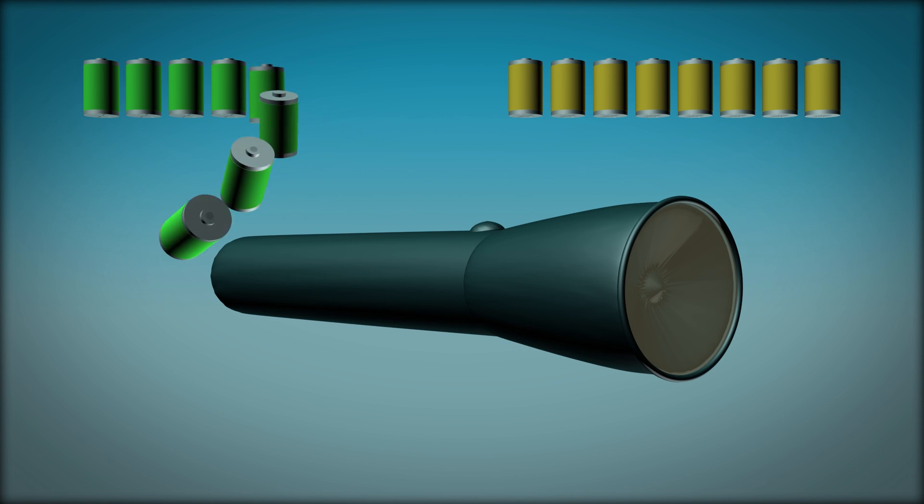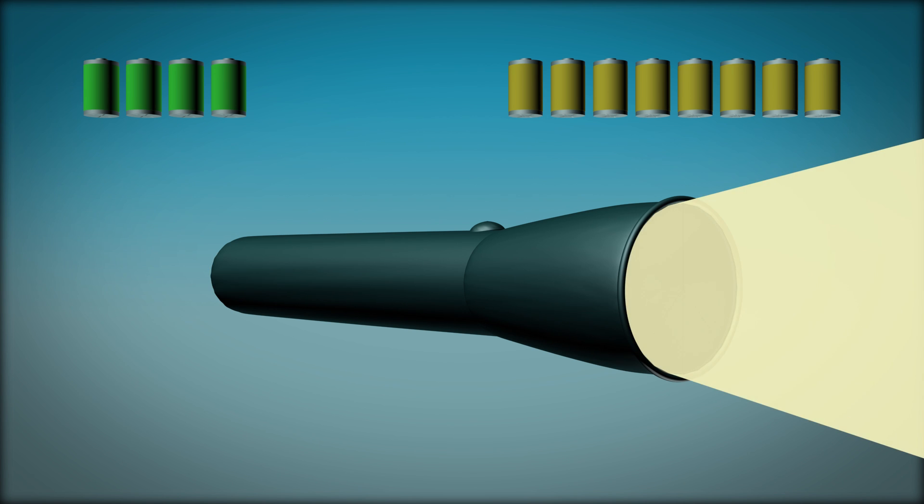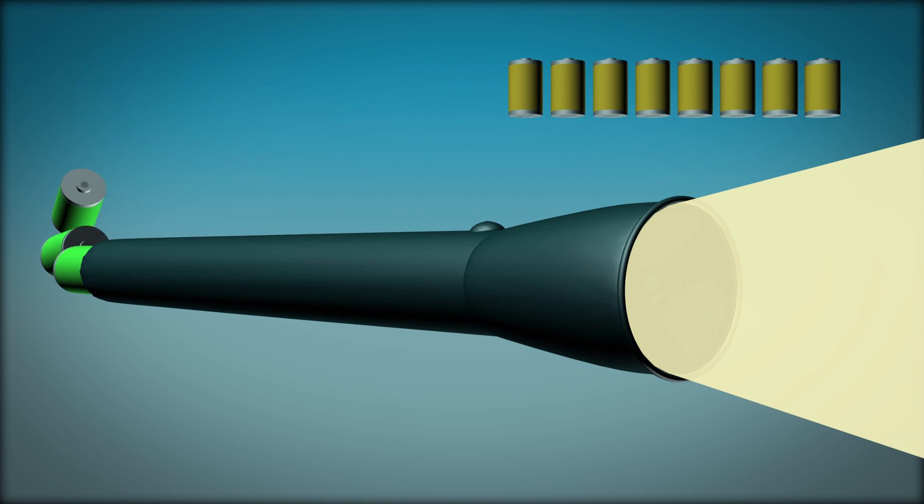A torch requires 4 new batteries to achieve maximum brightness. If we were to double the size of the battery compartment and use all the new batteries, the brightness of the torch will not increase as the maximum brightness has been achieved with the first 4 batteries.